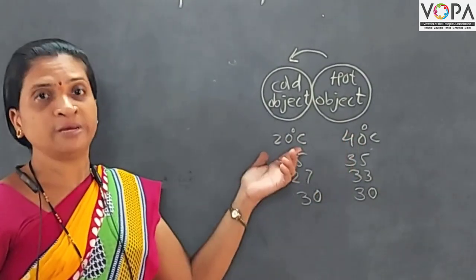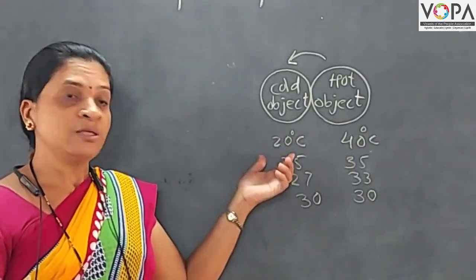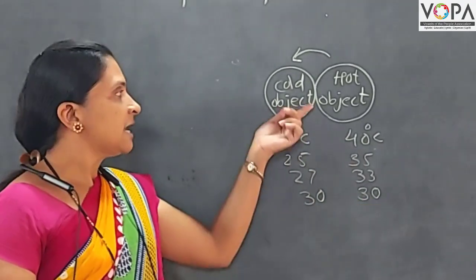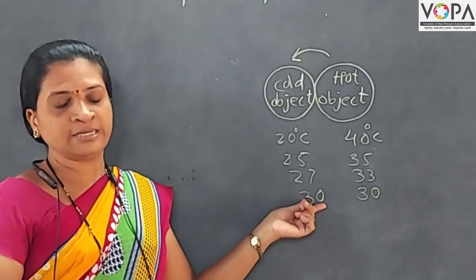Now exchange of heat here does not take place. Why? Because temperature of hot object is 30 degree Celsius. And temperature of cold object also 30 degree Celsius.